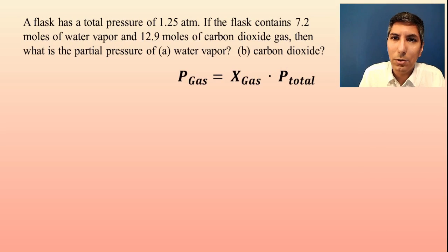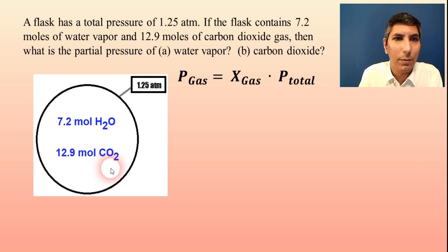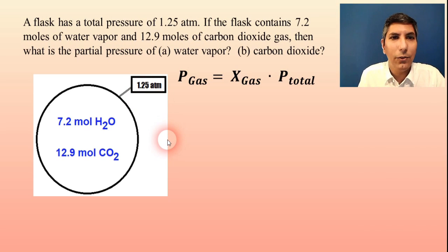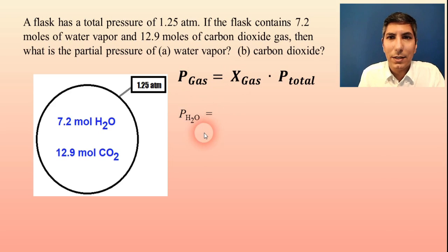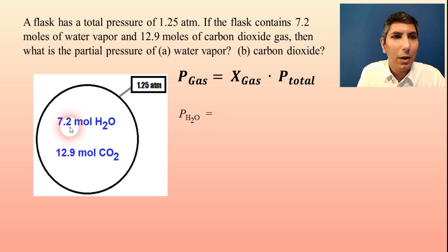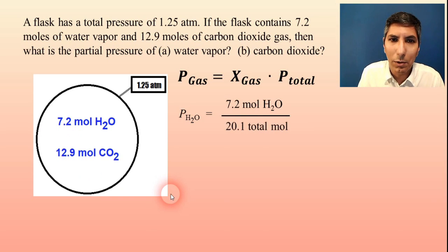I recommend drawing a diagram of what's going on here. I have written that there are 7.2 moles of water and 12.9 moles of carbon dioxide gas, with a pressure gauge showing 1.25 atmospheres as the total pressure. We're trying to solve for the partial pressure of water in part A. Let's find the mole fraction that water is taking up. Notice it's 7.2 moles of water out of the total — we have to add the two values together: 7.2 plus 12.9 gives us 20.1 total moles.